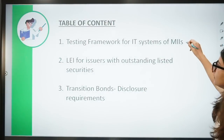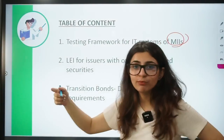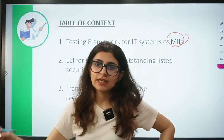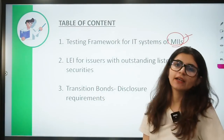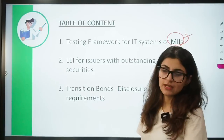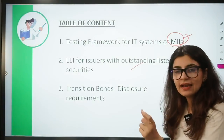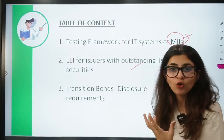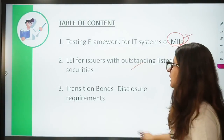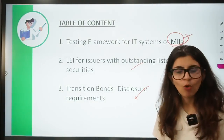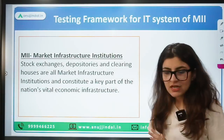The first topic today is about the testing framework of IT systems of MIIs — Market Infrastructure Institutions. We will understand what MII means and what the new testing framework includes, as SEBI has issued a recent circular on this. The second topic is about LEI — Legal Entity Identifier — which we all know about, and a question was asked in the RBI Grade B exam last year. The third topic is about transition bonds — what they are and why we need to understand them.